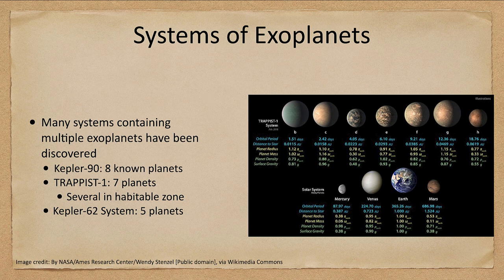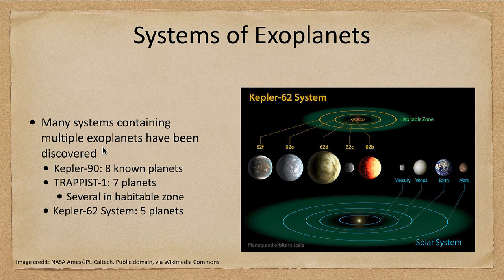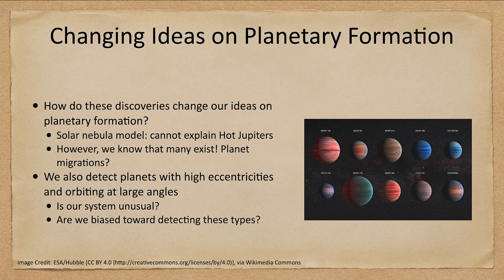Several of these TRAPPIST-1 planets are in the habitable zone of that star — it's a different type of star than our Sun, but several fall within the habitable zone shown as the green region. In our solar system, Venus is just off the inner edge, Mars is in the outer region, and Earth is right in the habitable zone. Having several planets in the habitable zone does not mean they have life, but there is potential for liquid water to be present.